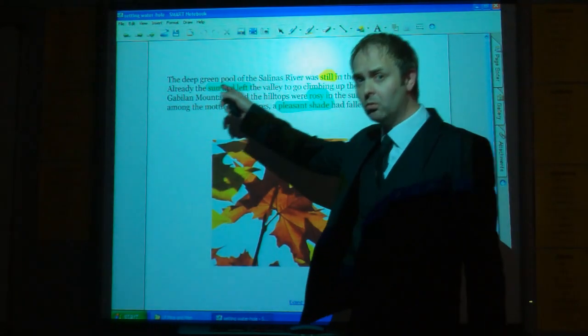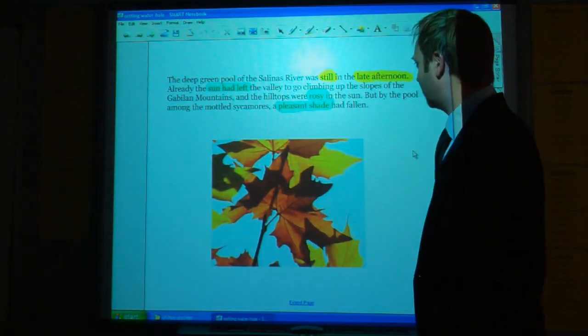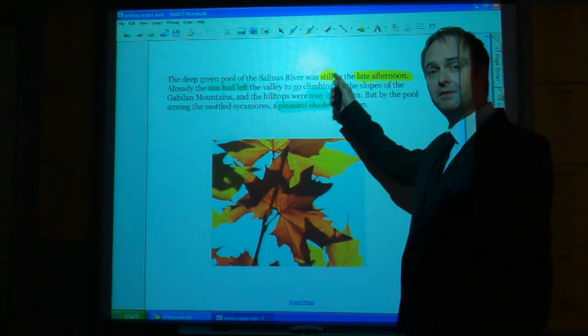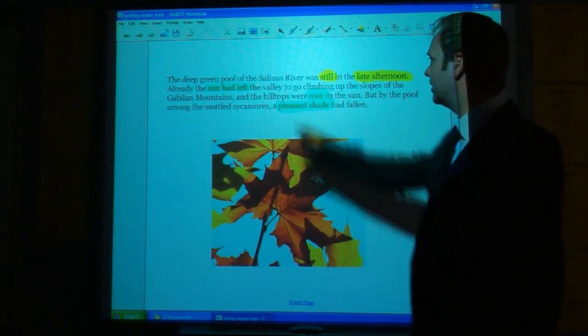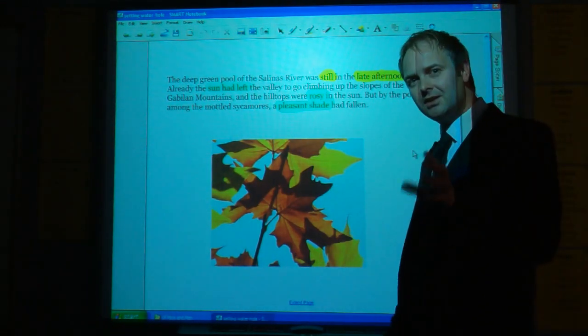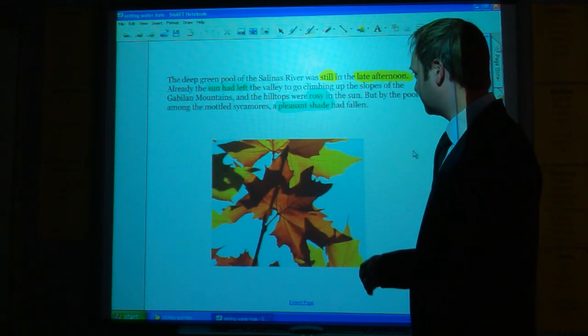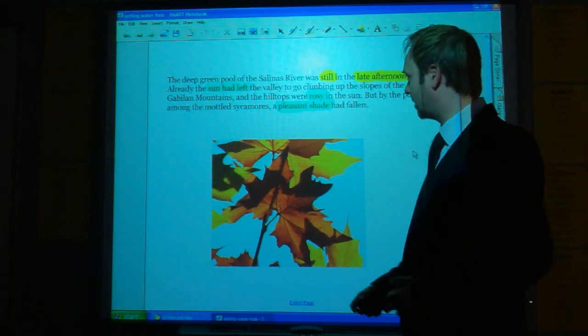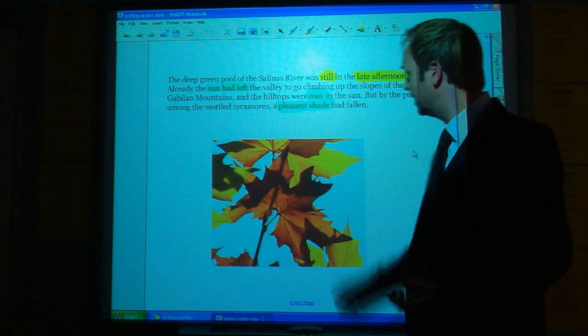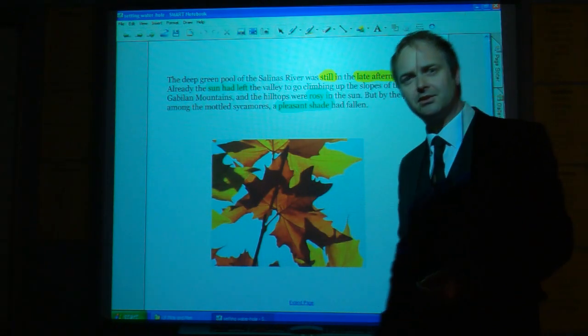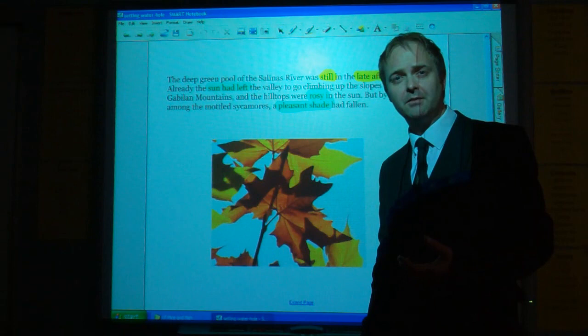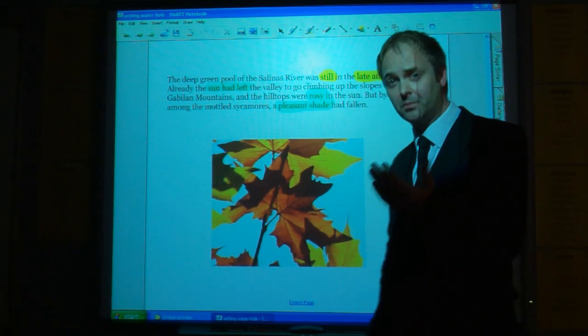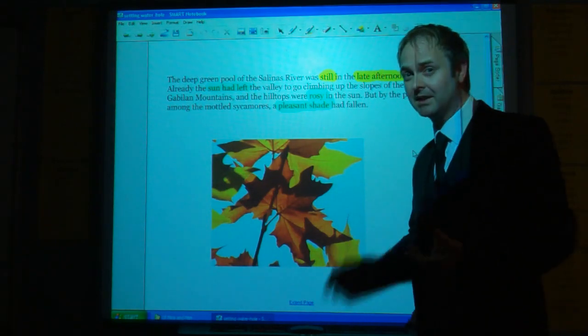It's again the deep green pool, reminding us of the chapter 1 description. It's still in the late afternoon, same time of day, and there's still that passivity. It's still. The sun had left the valley, and we're starting to get a few negative descriptions coming in at this point. Even though there's pleasant shade, and the sun is described as rosy on the mountains, which is essentially a positive word, even the word rosy has connotations that could be linked to blood. And given that we know that Curly's wife has been killed, and that Lenny is about to meet his fate as well, it's an appropriate term to have a slightly negative connotation for.